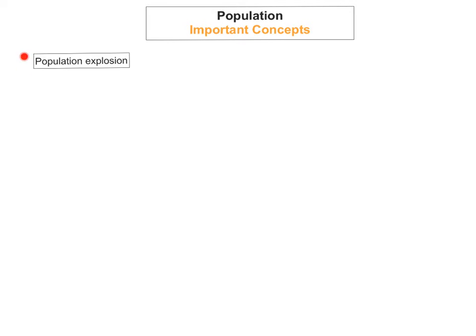The first one we're going to look at is population explosion. This is just the rapid growth of population in the 20th century. Every 10 seconds, the world's population is increasing by approximately 27 people.